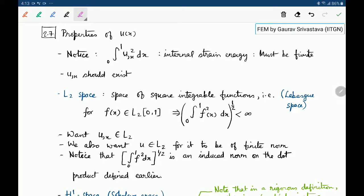Let us now look at properties of u(x). This integral u_x squared was the internal strain energy and this must be finite. So energy of a system must be finite. This means a requirement on u(x) is that u_x should exist. If u_x is not finite then the energy cannot be finite. Another requirement is that this integral as a whole should exist, it should not be infinity. It should be a finite number. Which means integral 0 to 1 u_x squared dx should be less than infinity.